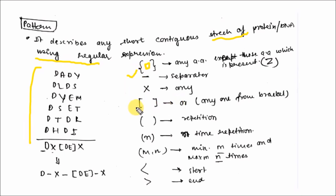The square bracket represents any of the amino acids present in the bracket. It is the reverse of the curly bracket, that is either D or E. This bracket represents the repetition. If n is there, that is n time repetition. If m, n is there, that is minimum m times and maximum n times repetition is there. Less than symbol represents the start of the sequence and greater than symbol represents the end of the sequence.